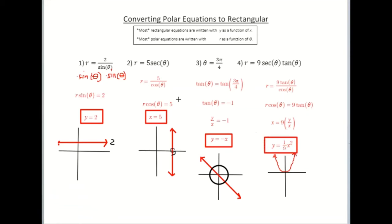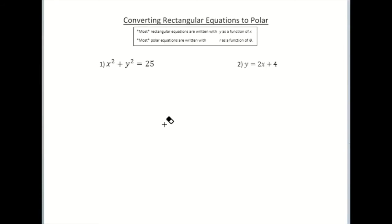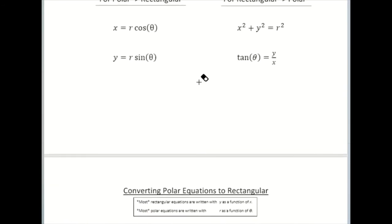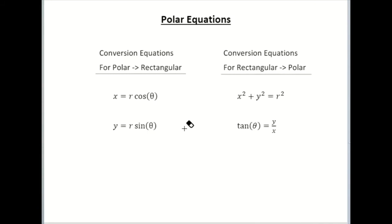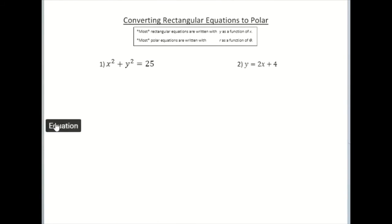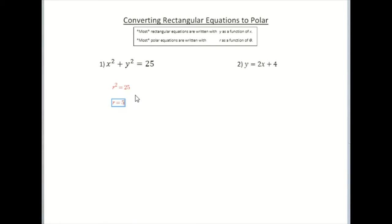So those are four different examples of converting an equation from polar form to rectangular form. Let's take a look at a couple where we're going from rectangular to polar. This first one: x squared plus y squared equals 25. Looking at the conversion equations, this is going to be super obvious — x squared plus y squared is r squared. So we can immediately say r squared equals 25. Taking the square root, you get r equals 5. In polar form, r equals 5 and r equals negative 5 actually end up being the same graph, so it's okay to just write r equals 5.